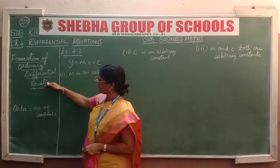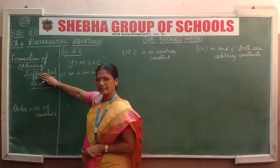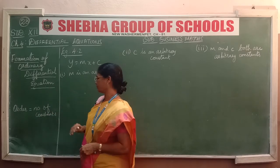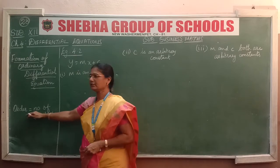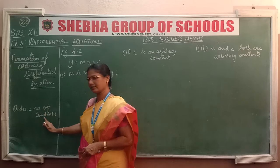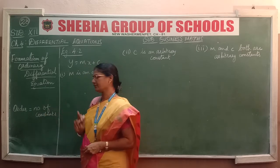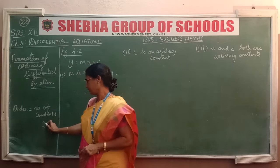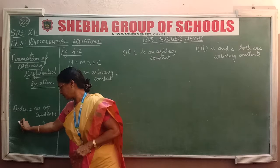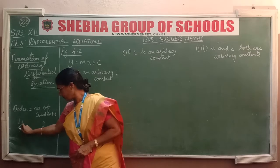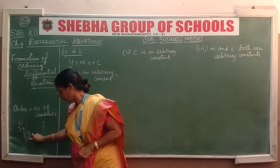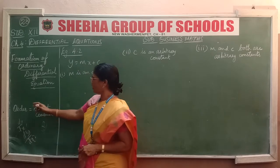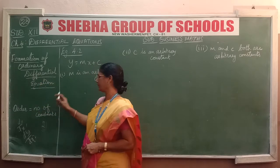In the formation of ordinary differential equations, the order of the differential equation is equal to the number of arbitrary constants in the family of curves. If we have one constant, we differentiate one time — that is order 1. Suppose two constants are there, we differentiate two times, giving dy/dx and d²y/dx². Generally, the order of the differential equation depends on the number of arbitrary constants.